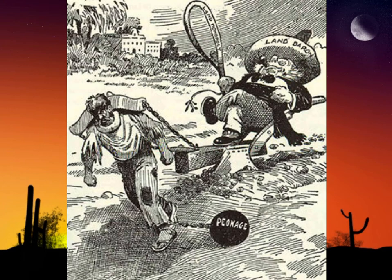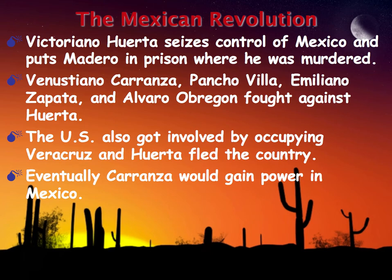With Díaz gone, different regional leaders began to take power and Mexico broke out into a civil war. Victoriano Huerta seized control of Mexico and had Madero imprisoned and murdered. Other groups — Carranza, Pancho Villa, Emiliano Zapata, and Obregón — all fought against Huerta. The U.S. got involved by occupying parts of Mexico, and eventually Carranza gained power.